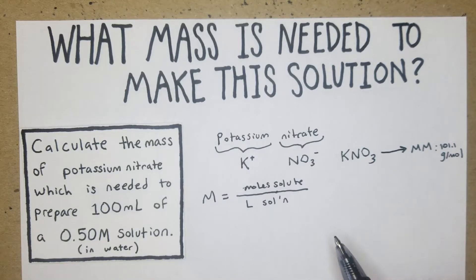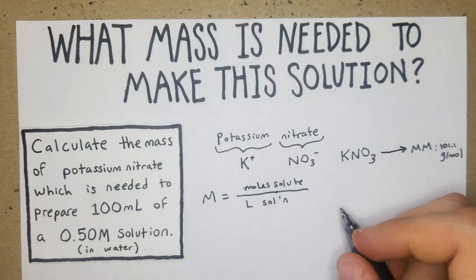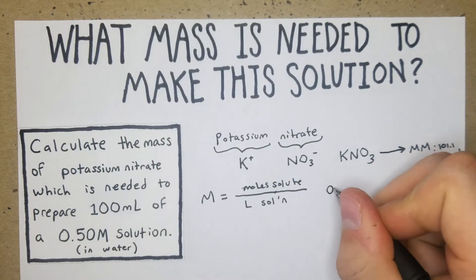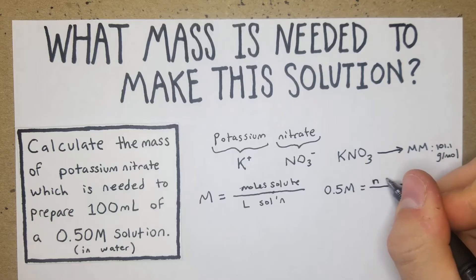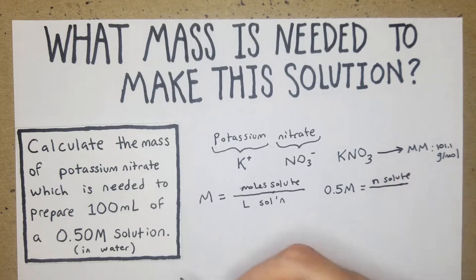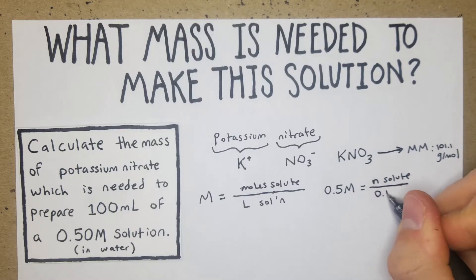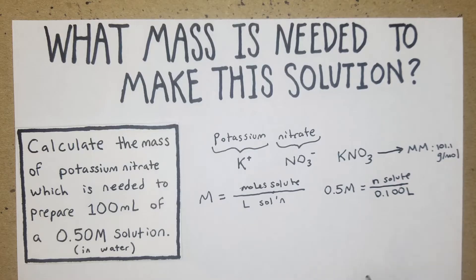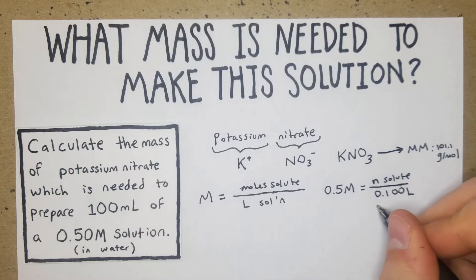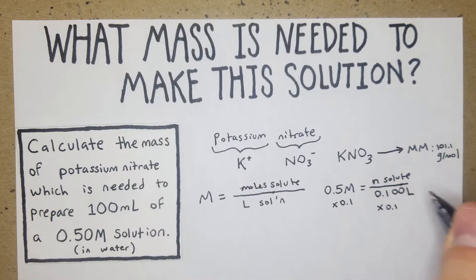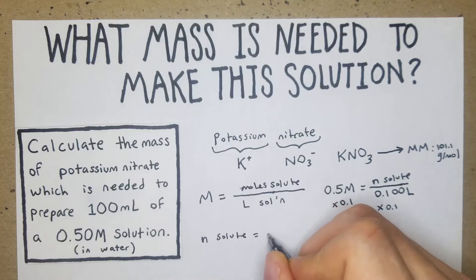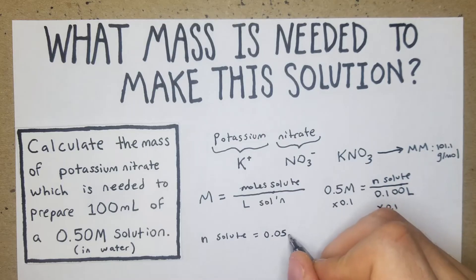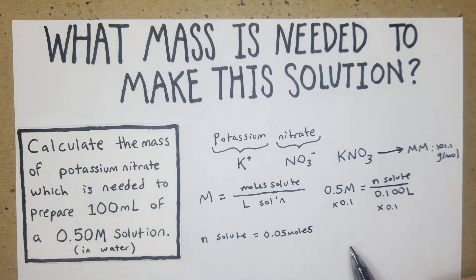If we can find the moles, we can work backwards to find the grams. Plugging in: 0.50 M equals moles of solute over 0.1 liters (converting 100 mL to liters, since molarity requires liters). Multiplying both sides by 0.1, we get moles of solute equals 0.05 moles.